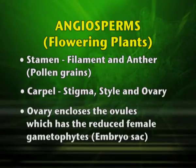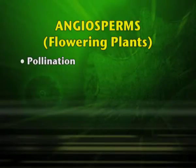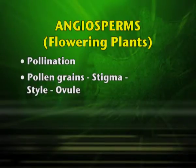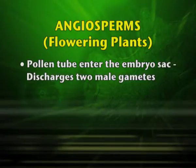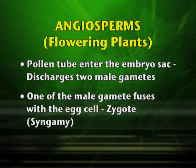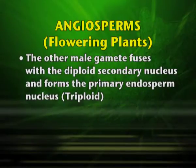The ovary encloses the ovule which has the reduced female gametophyte referred to as the embryo sac. Pollination is the transfer of pollen grains from the anther of the male flower to the stigma of the female flower. The pollen grains fall on the stigma and reach through the style to the ovule. The pollen tube enters the embryo sac and discharges two male gametes. One male gamete fuses with the egg cell, resulting in the formation of a zygote, known as syngamy.